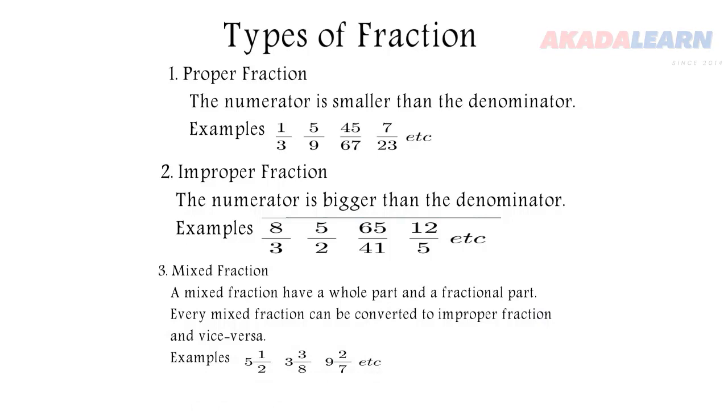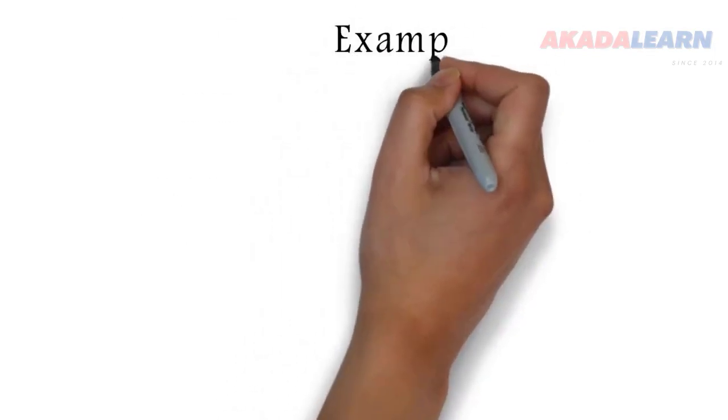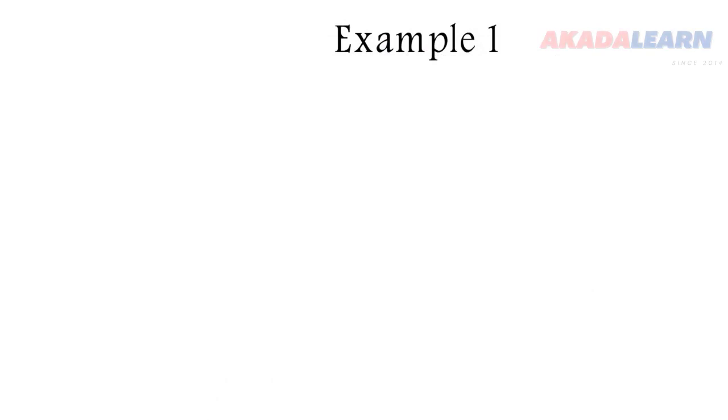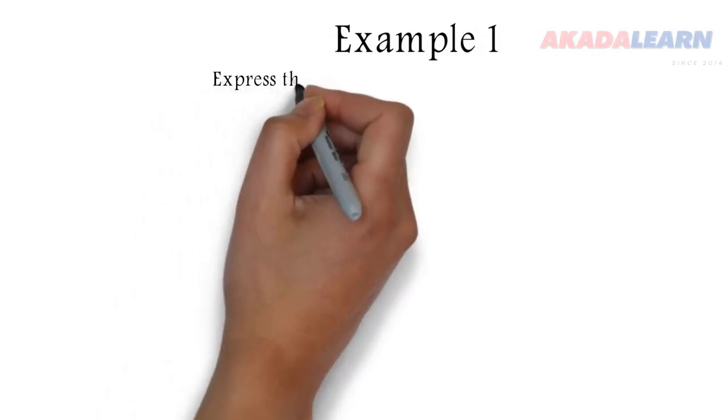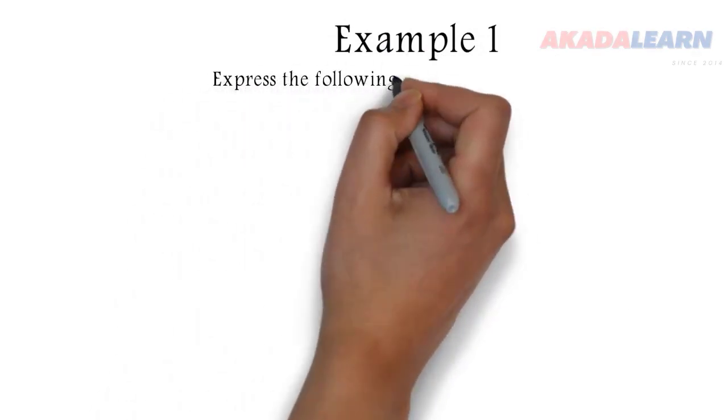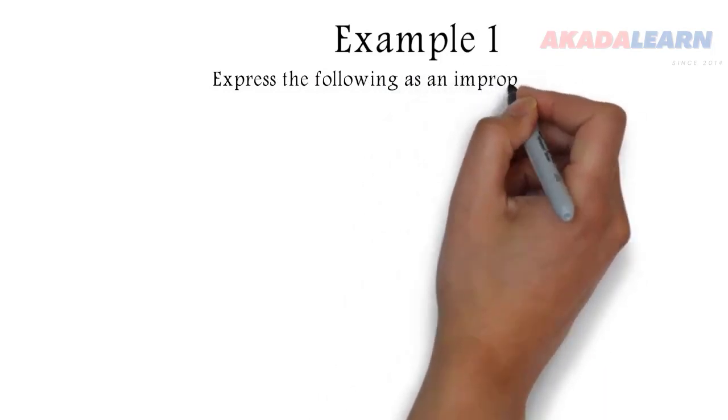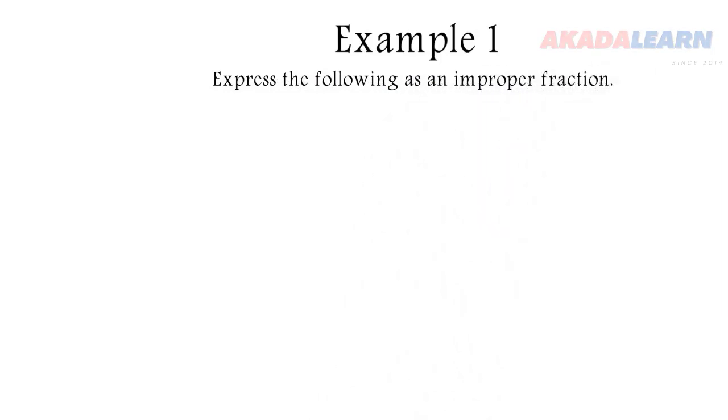Five whole number, one over two. Three whole number, three over eight. That is how we pronounce them. Now let's go ahead to example one. Example one, we are asked to express the following as an improper fraction. Let's see how to do that.